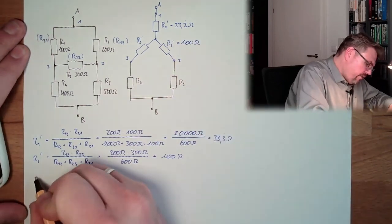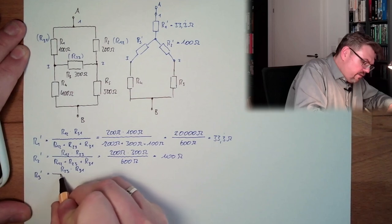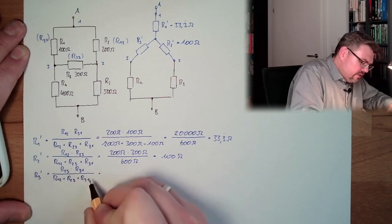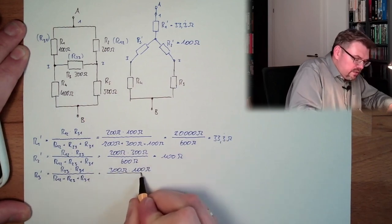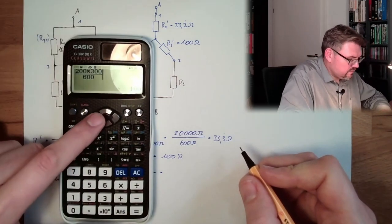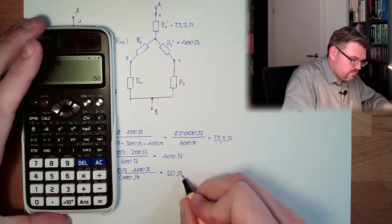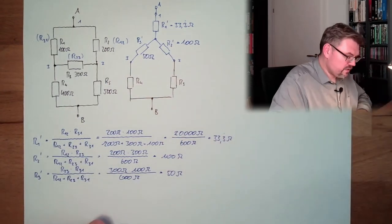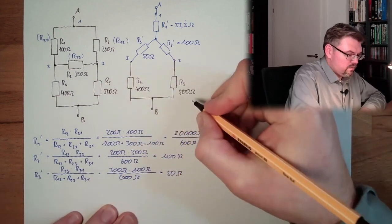And now r3' is r2,3 multiplied by r3,1 divided by this sum: r1,2 plus r2,3 plus r3,1. And this is r2,3 is 300 ohms multiplied by 100 ohms divided by 600 ohms. And this is 50 ohms. So you have 50 ohms. Now it's much simpler, because here we have 400 ohms and here we have 500 ohms.